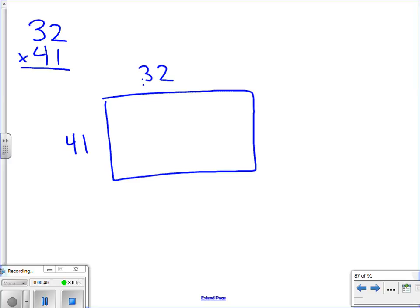So we're going to break the value of 32 up. The value of the 3 is 30 and the value of the 2 is 2. So we're going to split those into two parts.